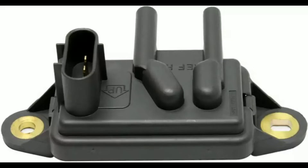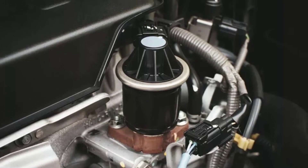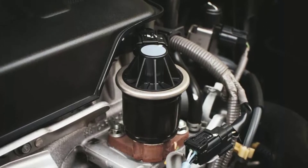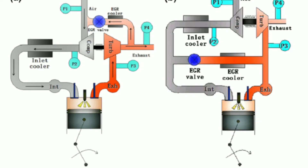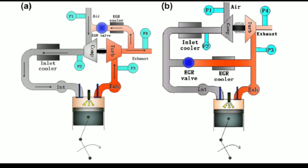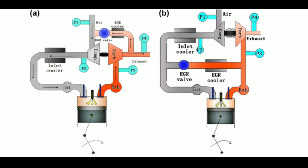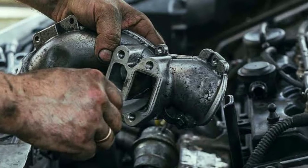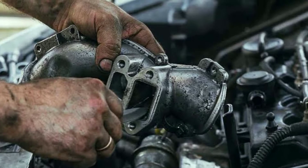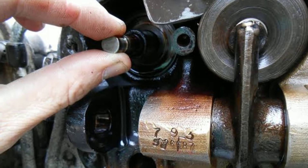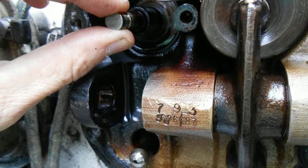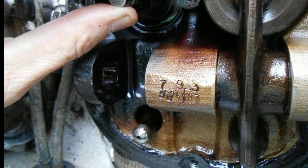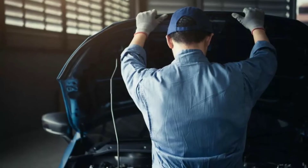Check with your vehicle's manufacturer for any available solutions. Regularly check for vacuum leaks, as they can also cause EGR system problems. Inspect your vehicle's vacuum hoses and connections for any cracks, leaks, or loose fittings, and replace or repair as needed. With these additional tips and troubleshooting steps, you should be well-equipped to tackle the P0400 code and maintain a healthy EGR system in your vehicle.